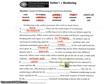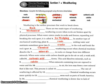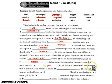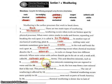When minerals containing iron are exposed to water and oxygen in the air, a new mineral may form that is very much like rust. This process, because it involves oxygen, is called oxidation.